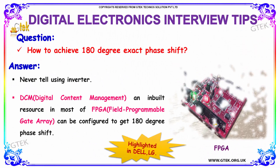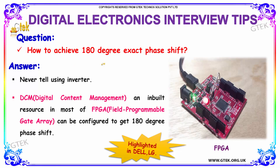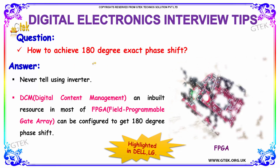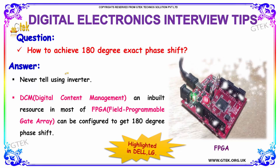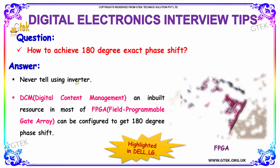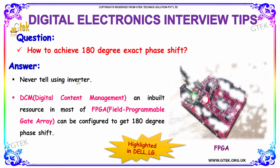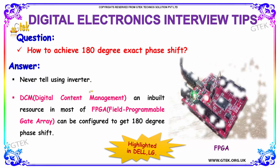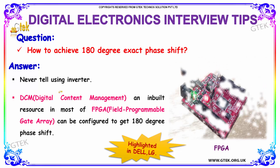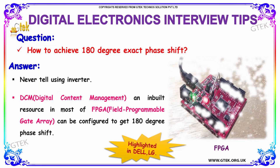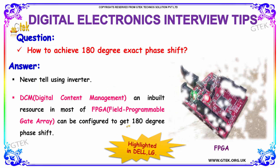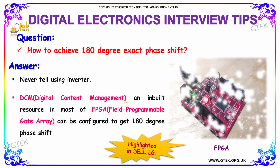The next question is: how to achieve a 180-degree exact phase shift? When answering this, never say using an inverter. DCM — digital content management — an inbuilt resource in most field-programmable gate arrays, can be configured to get the 180-degree phase shift. So the answer is FPGA.